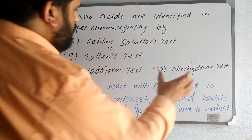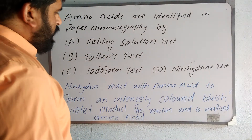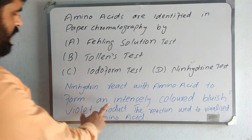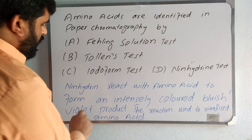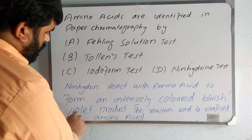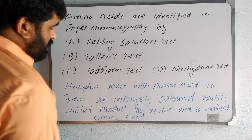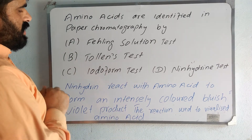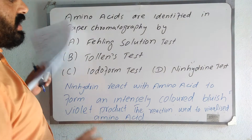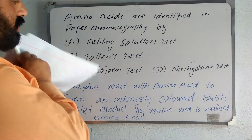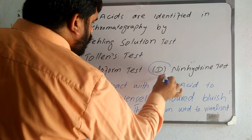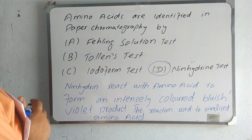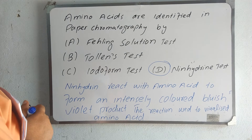The Biuret test is also not correct. The ninhydrin test is the correct option. Ninhydrin reacts with amino acids to form an intensely colored bluish-violet product. This reaction is used to identify amino acids. So ninhydrin test is used to identify amino acids.